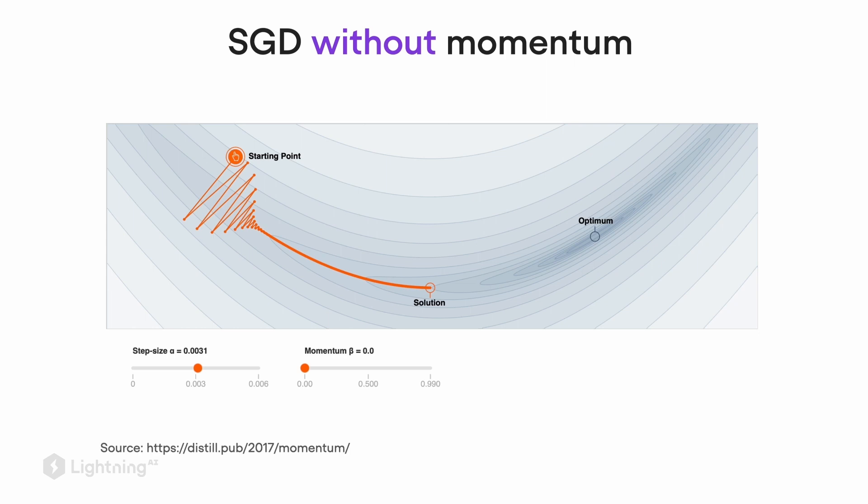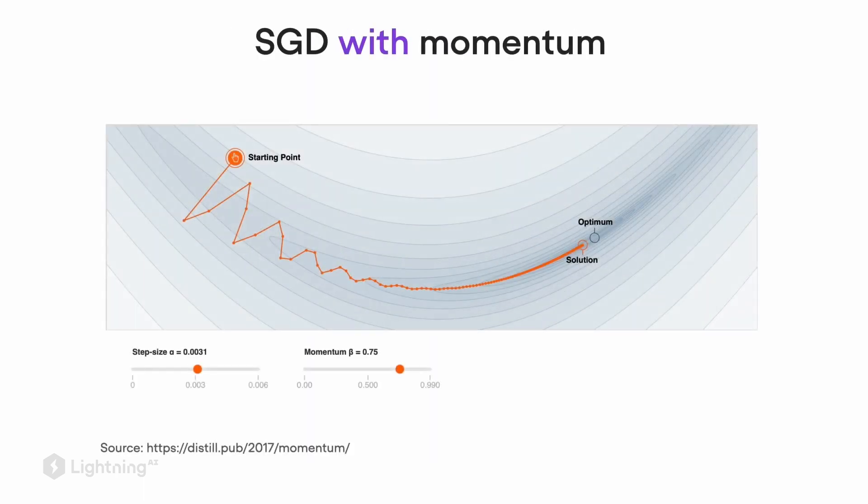In this slide, you see a surface plot of a loss function. On the right hand side, that's the point we want to reach, the solution, let's say the loss minimum. On the left hand side is our starting point. When we use Stochastic Gradient Descent without momentum, there are a lot of oscillations which over time shrink, and then at some point the algorithm will stop.